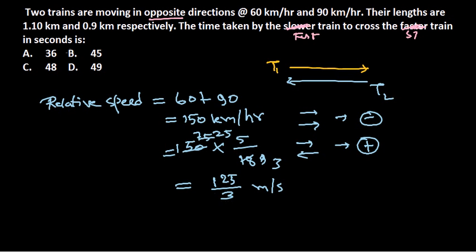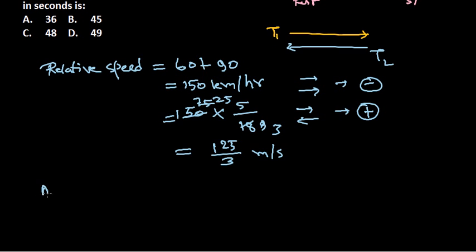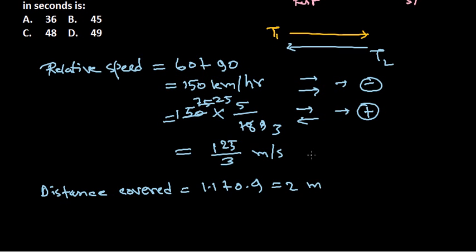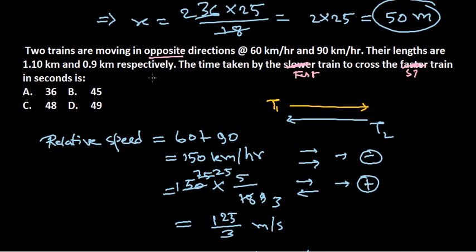Now, the lengths of the trains are 1.1 km and 0.9 km. When two trains cross each other, the total distance covered is the sum of both their lengths. So total distance = 1.1 + 0.9 = 2 km = 2,000 meters.